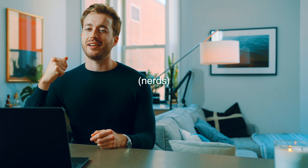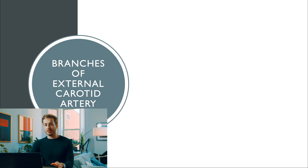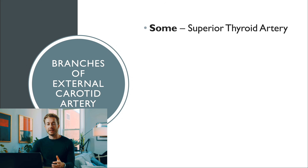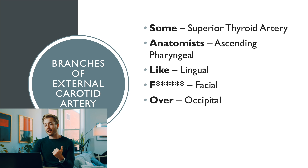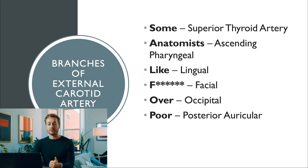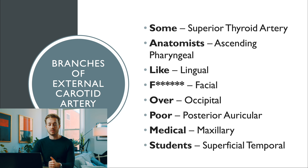Another anatomy mnemonic: Some Anatomists Like Effing Over Poor Medical Students — the branches of the external carotid artery in order: superior thyroid artery, ascending pharyngeal artery, lingual artery, facial artery, occipital artery, posterior auricular artery, maxillary artery, and superficial temporal artery.